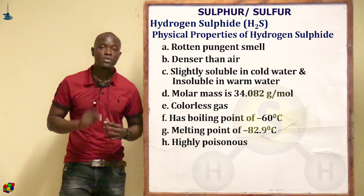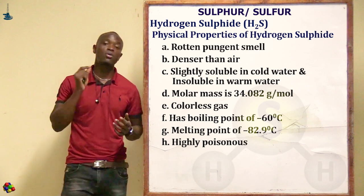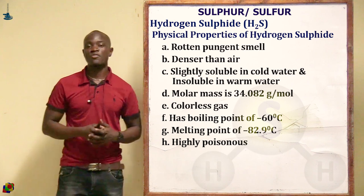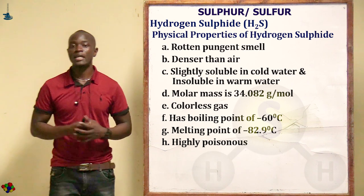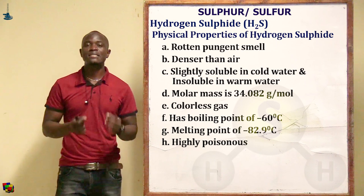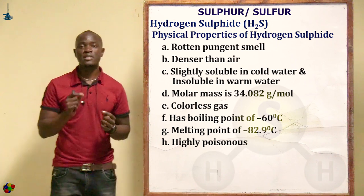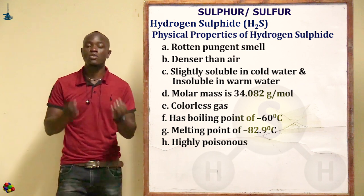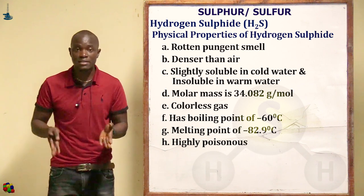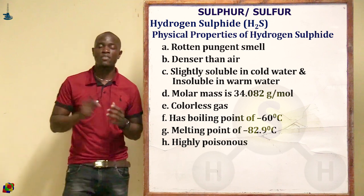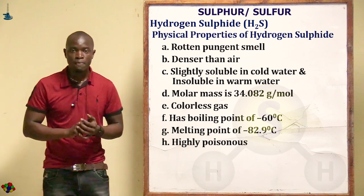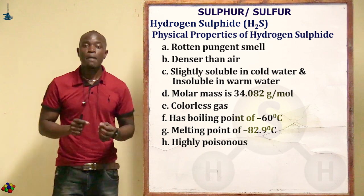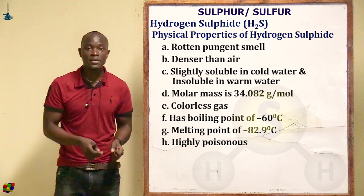It is slightly soluble in cold water, so cold water should never be used in the collection — only warm water should be used. It has a melting point of −82.9°C. It is also a highly poisonous gas; if you are exposed too much to this gas, it will begin poisoning your cells and must always be avoided.